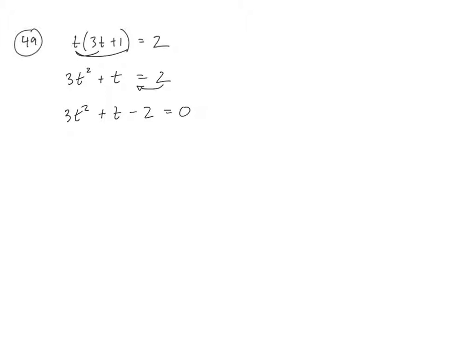So to factor it, let's use the AC method. So 3 times negative 2 is negative 6. So two numbers that multiply to negative 6, and they have to add to a positive 1. So minus 3 times a positive 2, that's negative 1. Oh, so it'll have to be a 3 and a negative 2. So I'm replacing that middle term with these two numbers. So 3t² + 3t - 2t - 2 = 0.